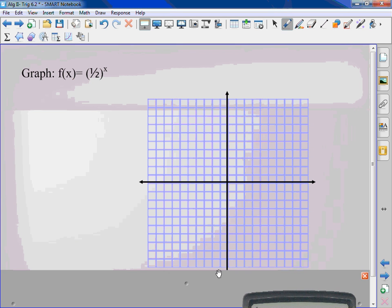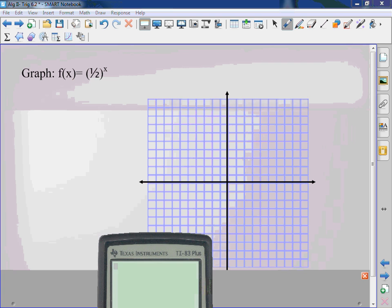I want you to graph this one and see what happens. When you make your table, X, F of X. Negative 3, negative 2, negative 1, zero, one, two, three. What happens from one half to the negative third? It becomes 8. It's the flip of it. So, right. And this would be 4, 2, 1, one half, one fourth, one eighth.